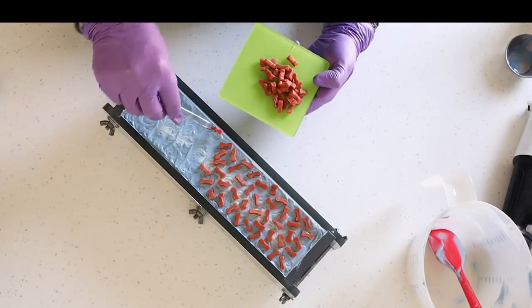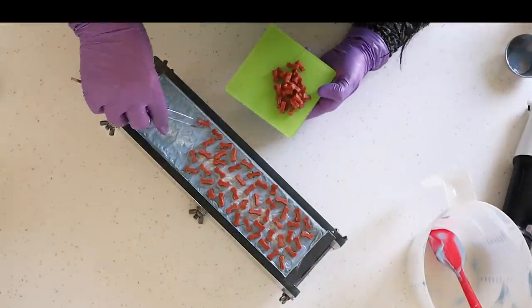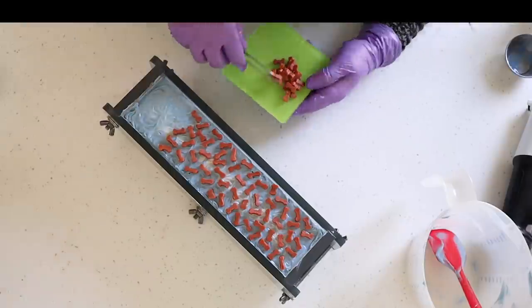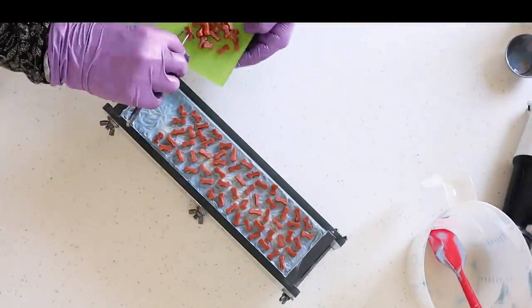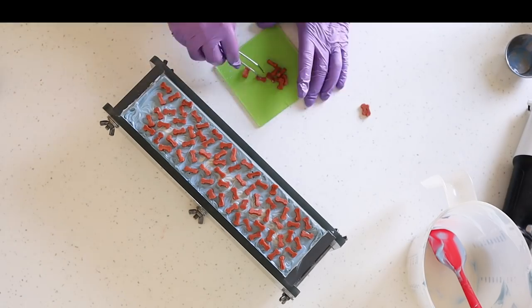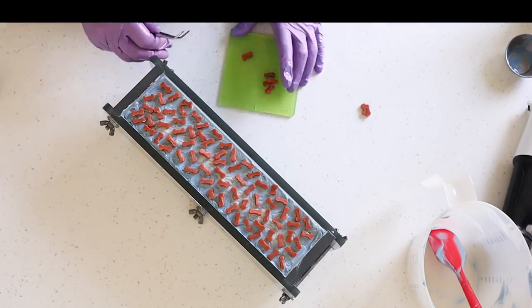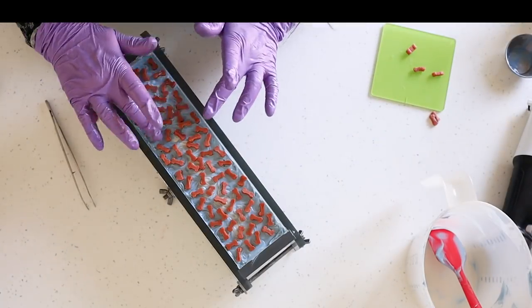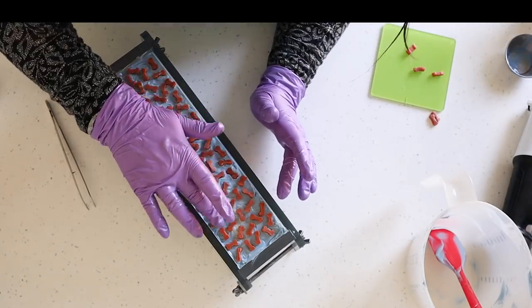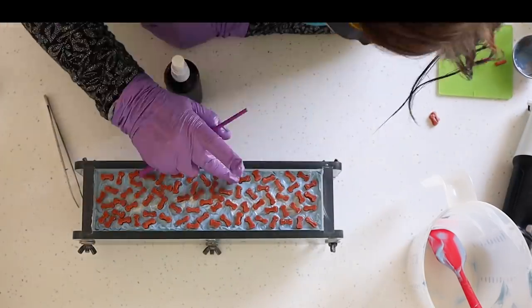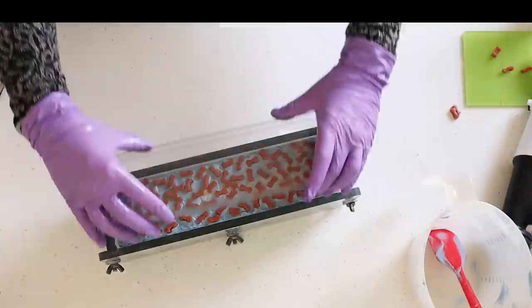So I'll just speed this up because I'm sure you don't need to see me place every single little dog bone on the top of the soap. And then once we're all done I'll just put the lid on the mold and cover it and then it just gets c-popped overnight and we'll unmold it the next day.